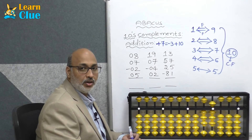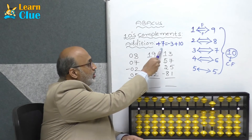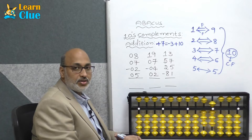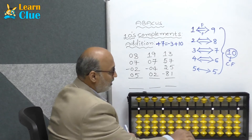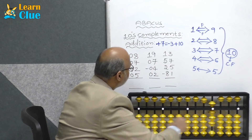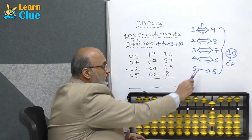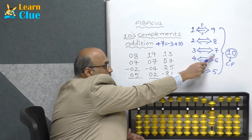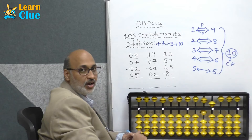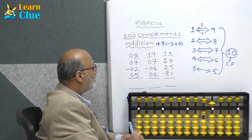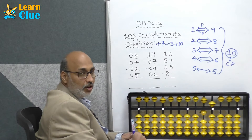Hi students, in this session we are going to learn about tens complements addition plus 7 technique. Let's see some problems. Plus 8, now they are asking plus 7 — who is the friend of 7? 3. So minus 3 plus 10. Now they are asking minus 2 — try in 5s complements.